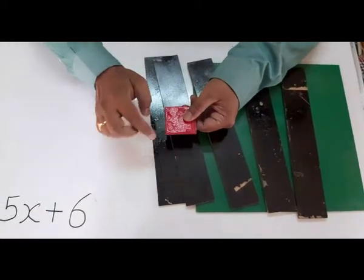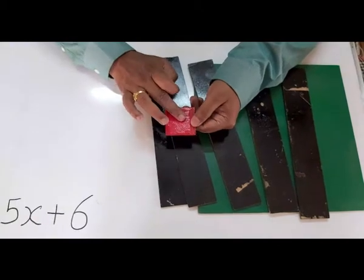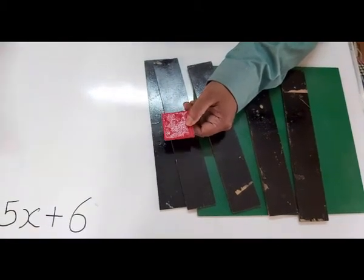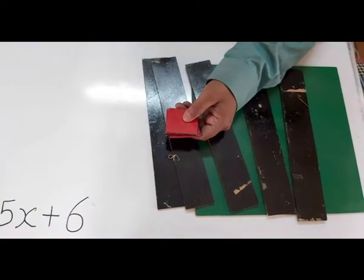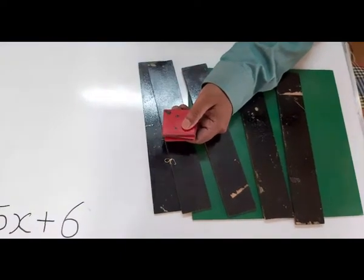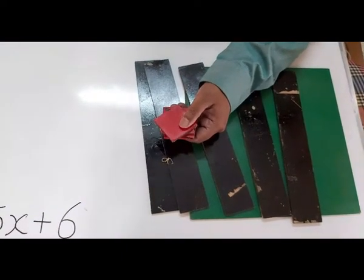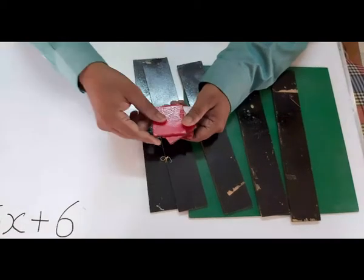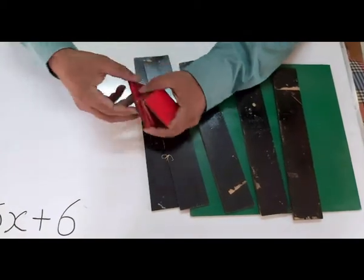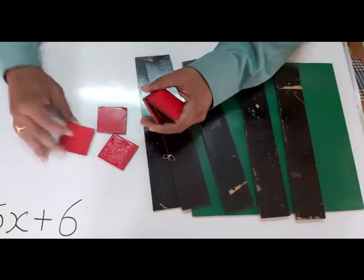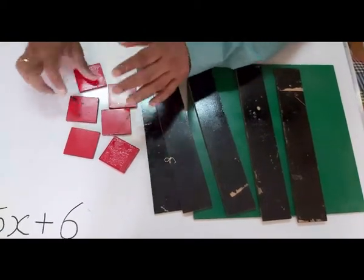This side is 1. So its side is 1. So its area is 1. 1 plus 1, 2, 3, 4, 5 and this is 6. So 6 I have taken. See 1, 2, 3, 4, 5, 6.